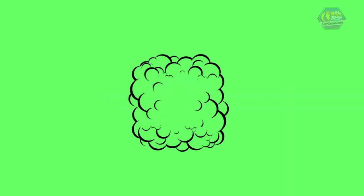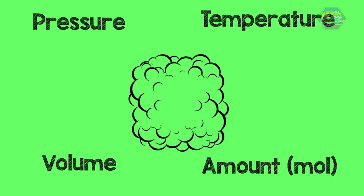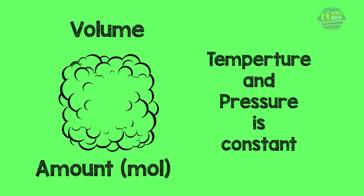In a gas, its physical behavior is described by four variables: pressure, volume, temperature, and amount or mole. In this video, we will discuss Avogadro's Law, which is concerned with the relationship of volume and amount of gas. This condition is true when temperature and pressure are constant.